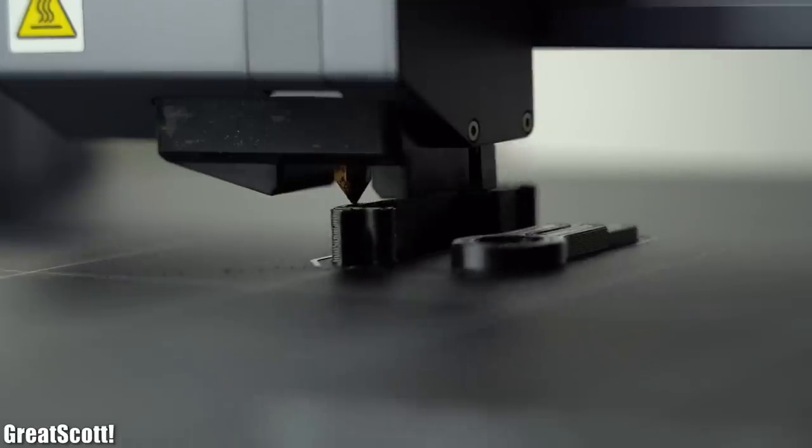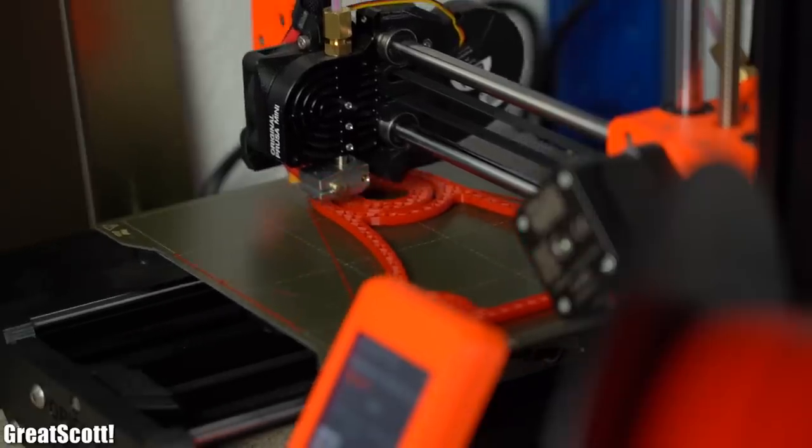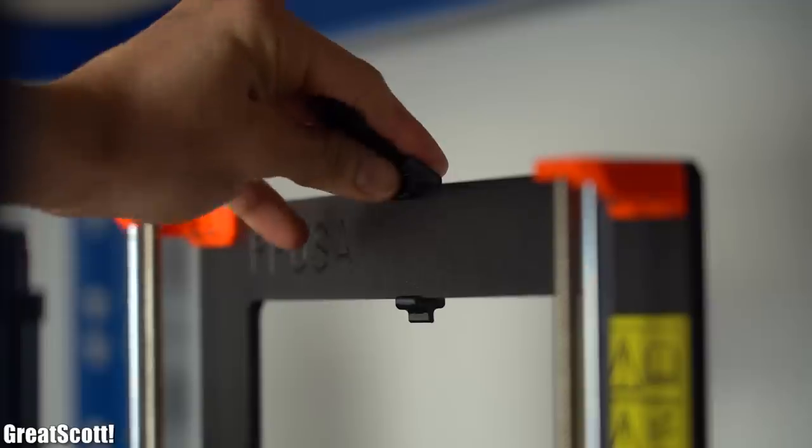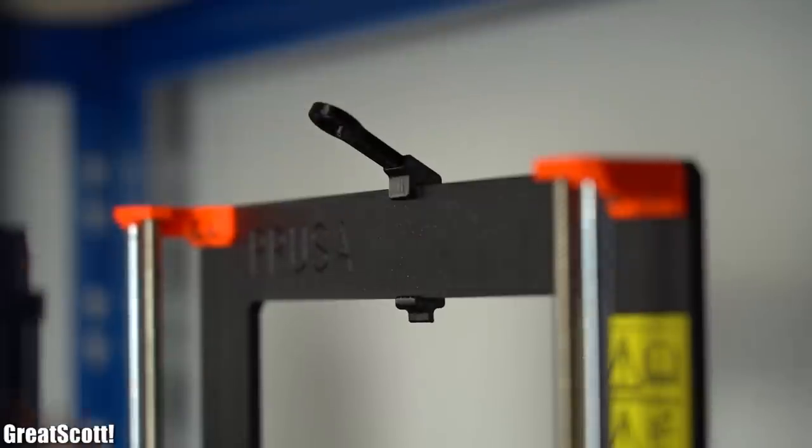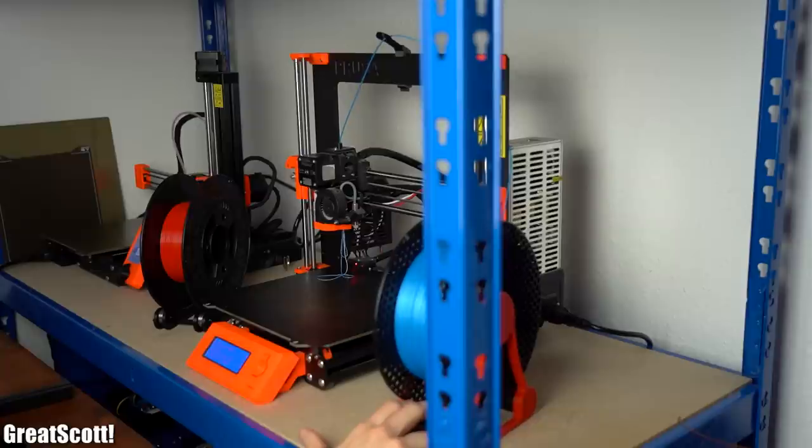Now I 3D printed 4 more parts with this machine while I used my Prusa Mini for 2 other parts, so that I could quickly add a filament guide as well as a spool holder to my MK3 to make it functional again.